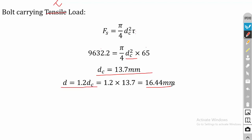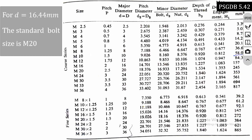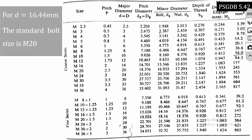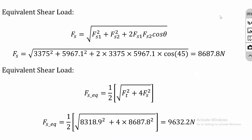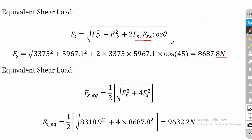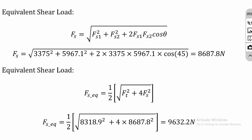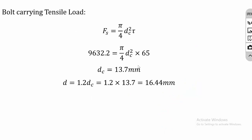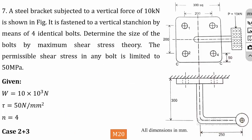Substituting fs_equiv and τ into fs = (π/4)·dc²·τ and solving gives dc, then d = 1.2·dc = 16.44 mm. From the data book, the standard bolt for 16.44 mm is M20. The procedure for combined cases: consider each eccentricity separately to get secondary loads, combine the shear loads first, then combine with the tensile load to get equivalent shear stress, and finally use the stress equation to find the diameter.